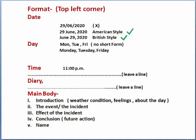The main body is the most important part of your diary. It has certain elements. The first element is the introduction. Under introduction, you should write about the weather condition, your feelings, and the condition of the day. For example, simple sentences like 'It was a sunny morning,' 'It was a bright day,' or 'It was a cold night.' Write a very simple and easy sentence for the introduction.